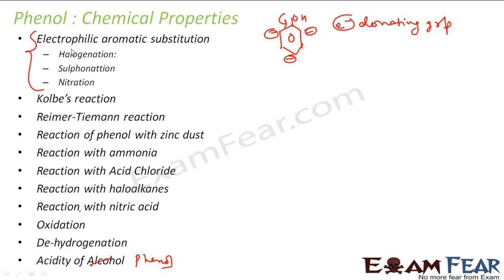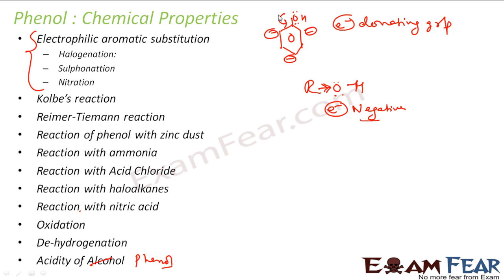We'll study many electrophilic substitution reactions here. Please note that when OH is attached to an aliphatic hydrocarbon, oxygen is an electron-withdrawing group due to the difference in electronegativity. But when it is attached to an aromatic hydrocarbon, it is an electron-donating group because it has a lone pair. So keep this difference in mind: the same OH group gives electrons when part of an aromatic ring, but withdraws electrons when part of an aliphatic hydrocarbon.